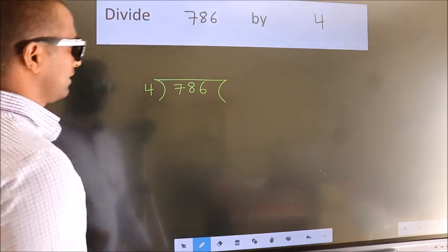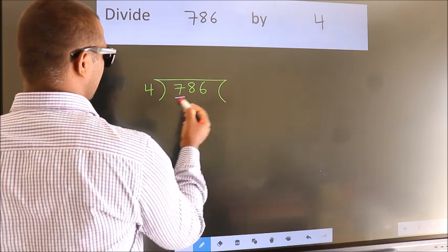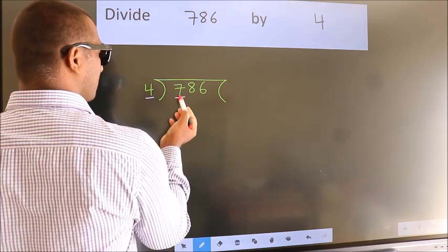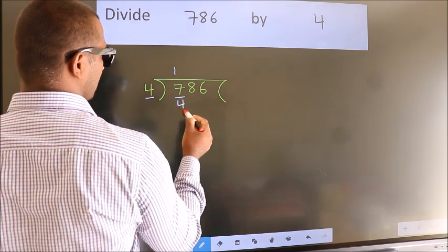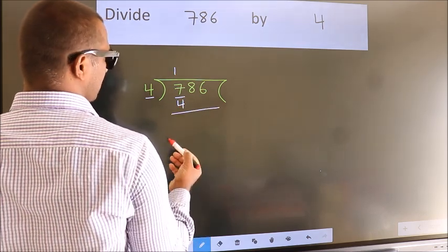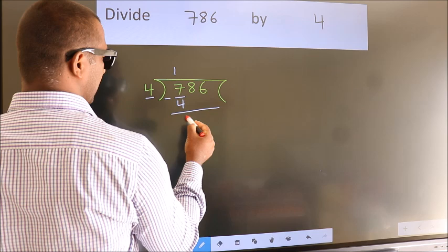Next, here we have 7, here 4. A number close to 7 in the 4 table is 4 once 4. Now, we should subtract. We get 3.